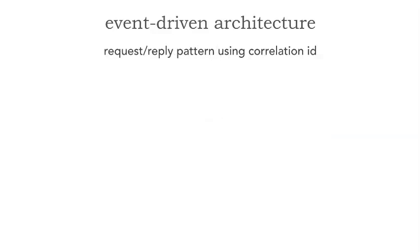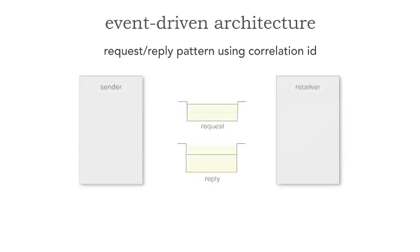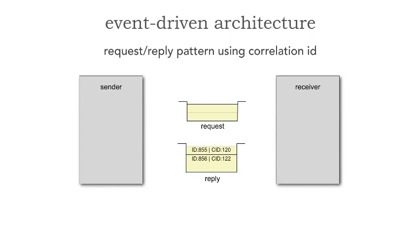Let me show you in a bit more detail how this works technically using something called a correlation ID, because we have the sender and the receiver. Notice in this reply queue there are already messages there — let's say we're getting the first name of a customer. Those first names are already there, but those aren't ours.